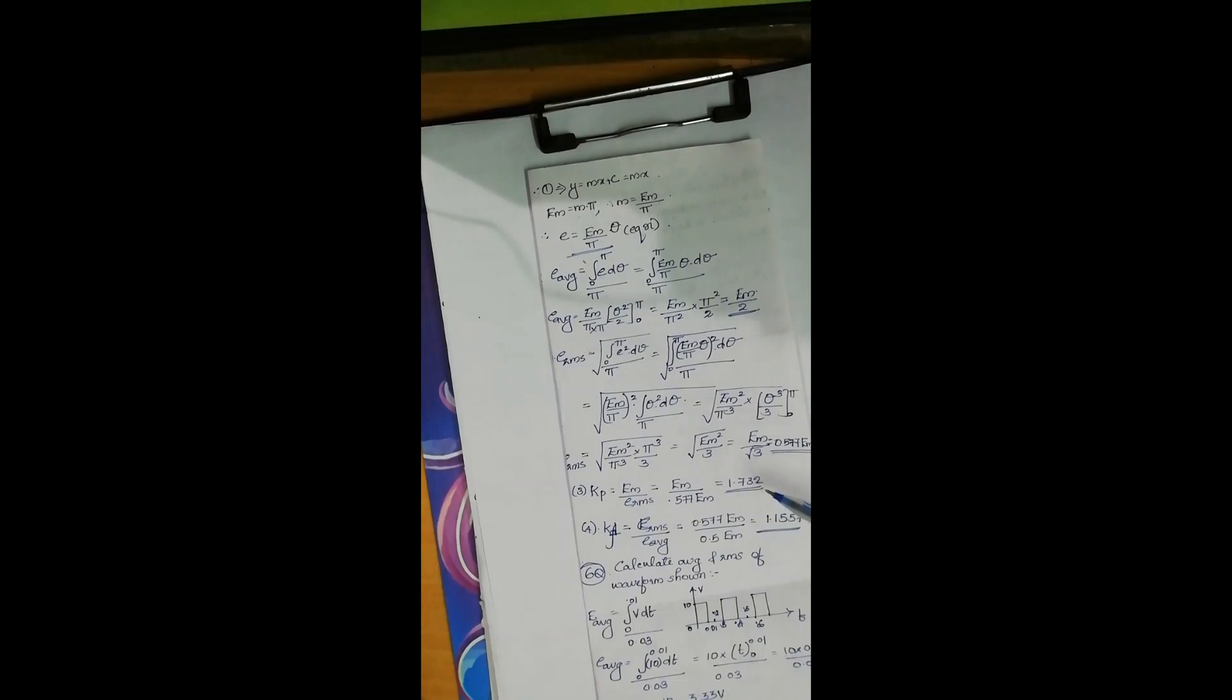And form factor is calculated as e RMS by e average. So all the values of a sawtooth waveform are getting calculated. Thank you.